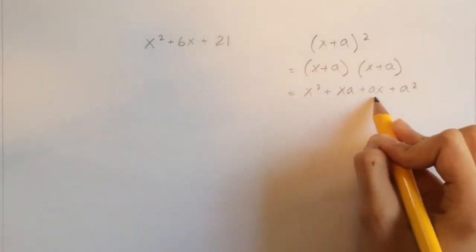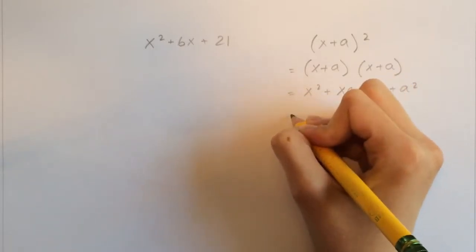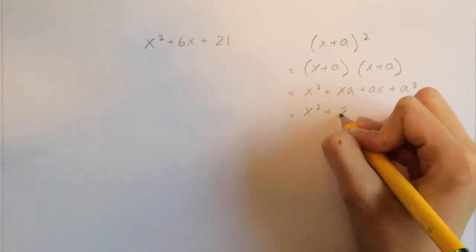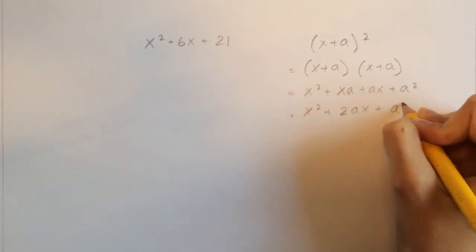These two terms are the same thing since it's multiplication and there's any order to multiplication. So this would be equal to x² + 2ax + a².